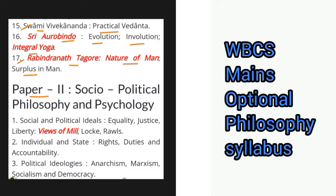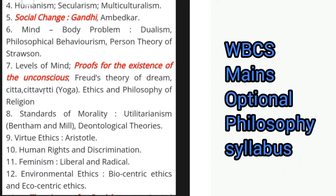Moving over to Paper 2 — socio-political philosophy and psychology. We have social and political ideals: equality, justice, liberty, views of Mill, Locke, and Rawls. Then individual and state — rights, duties and accountability. Next, political ideologies: anarchism, Marxism, socialism and democracy. Then the concepts of humanism, secularism, multiculturalism. Then social change — Gandhi, Ambedkar.